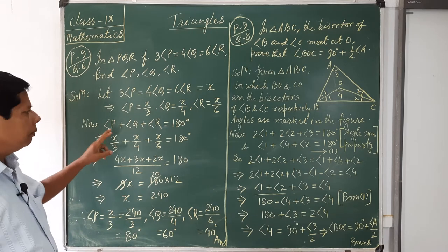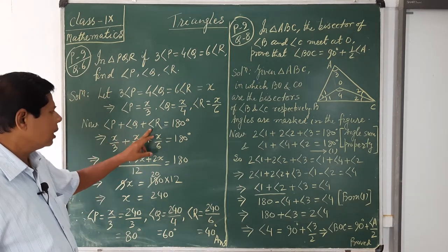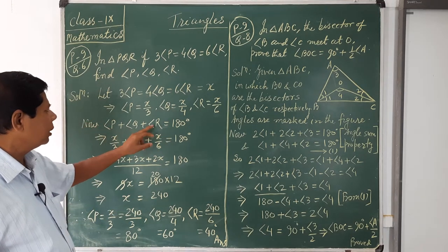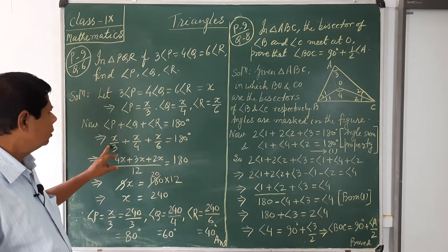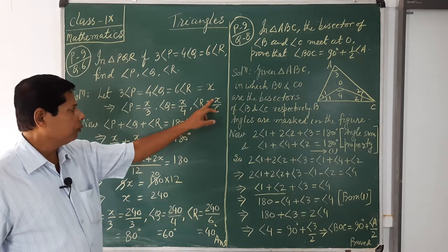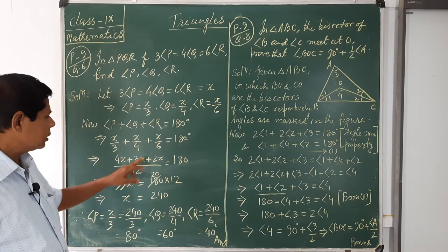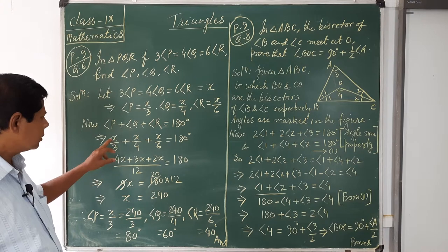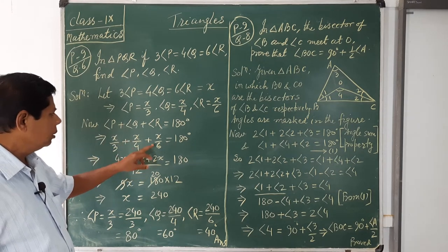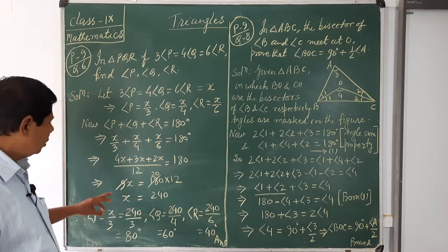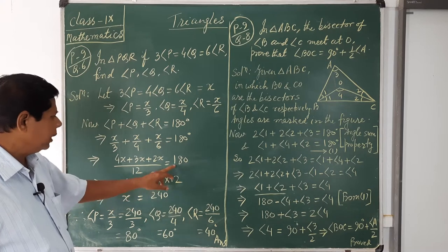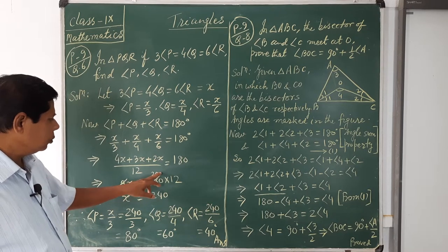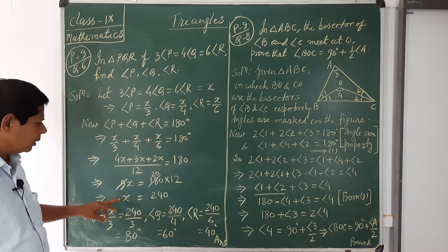Now, we know that by the angle sum property of a triangle, P + Q + R = 180°. Using this relation, replace P, Q, R in terms of x: x/3 + x/4 + x/6 = 180. The LCM of 3, 4, 6 is 12. Dividing 12 by 3 gives 4x; by 4 gives 3x; by 6 gives 2x. So 4x + 3x + 2x = 9x = 180 × 12. Cancelling by 9 gives x = 240.